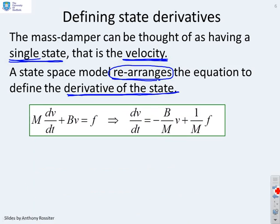Here's my original equation: m dV/dt plus BV equals F. I can write that as an equation which gives the derivative of the state explicitly. Here it is: dV/dt, the derivative of the state, and you'll see it's given as minus B over M times the velocity plus 1 over M times F.